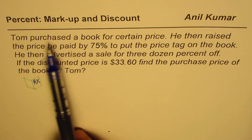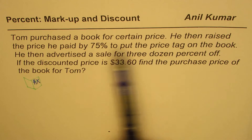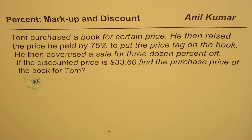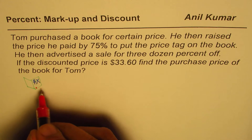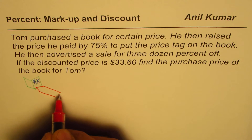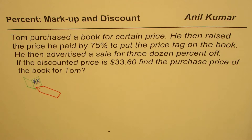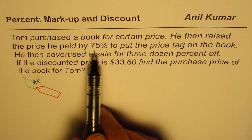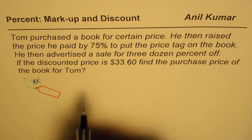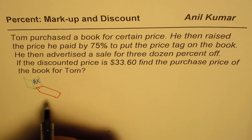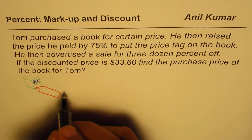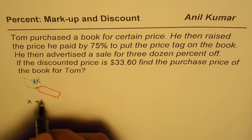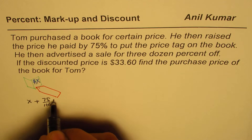Now let's see what happens. Tom purchased a book for a certain price. He then raised the price he paid by 75% to put a price tag. So on this, Tom put a price tag. So he purchased for X dollars and put a price tag by increasing the price by 75%. So 75% of X — the price here is X plus 75 over 100 of X.